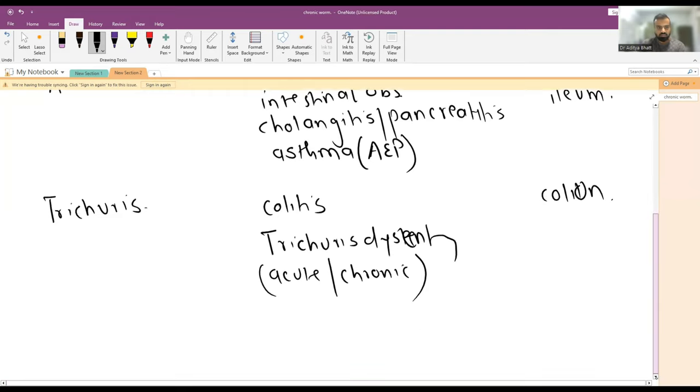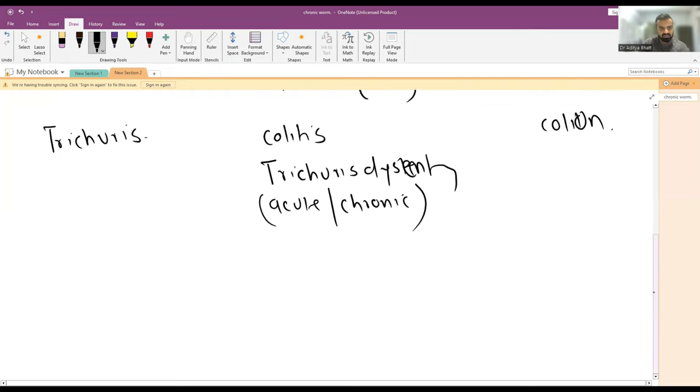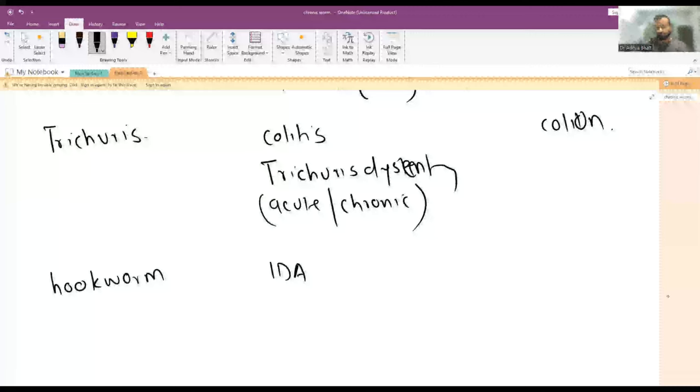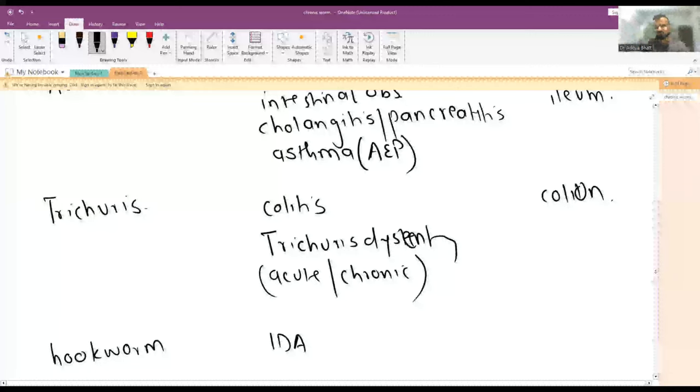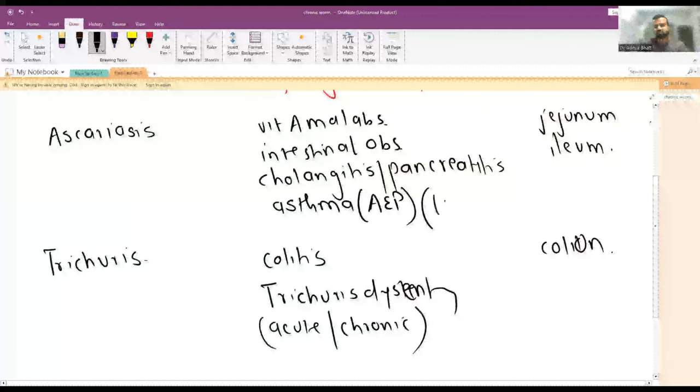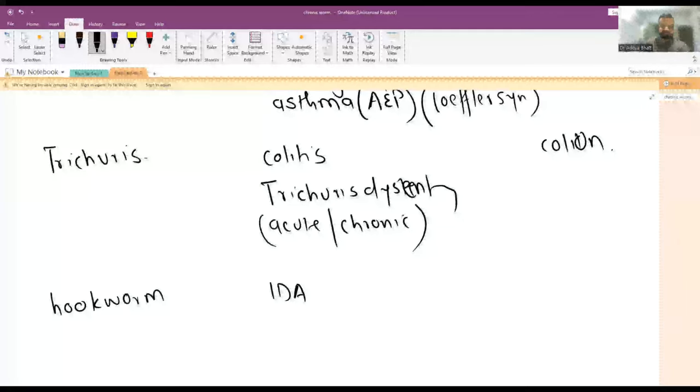The next worm is hookworm - Necator americanus and Ancylostoma duodenale. Hookworm usually leads to iron deficiency anemia, and that is usually all that it causes. Along with this, the larva migrans may also lead to cutaneous clinical features and even pulmonary pneumonitis. The specific pulmonary pneumonitis or AEP seen with ascariasis is known as Loeffler syndrome.